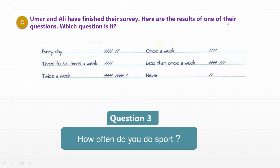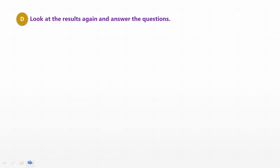Which question do these results belong to? The highest-variety answers relate to Question 3 — 'How often do you do sport?' — which records the number of times students exercise.